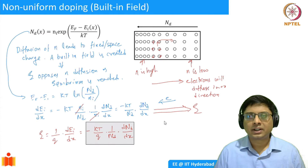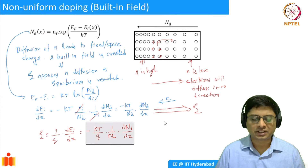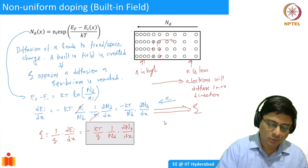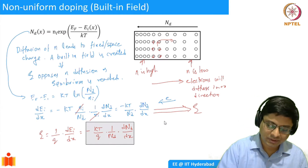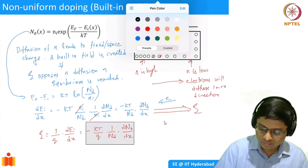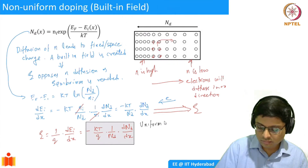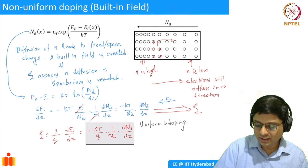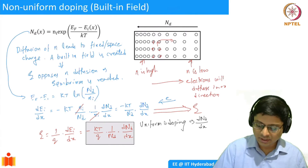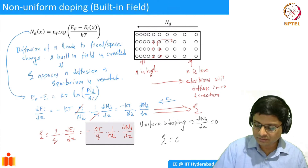We can do a sanity check: what happens if you have uniform doping? Uniform doping implies dN_D/dx equals zero, which implies E equals zero — no built-in field. That makes sense.